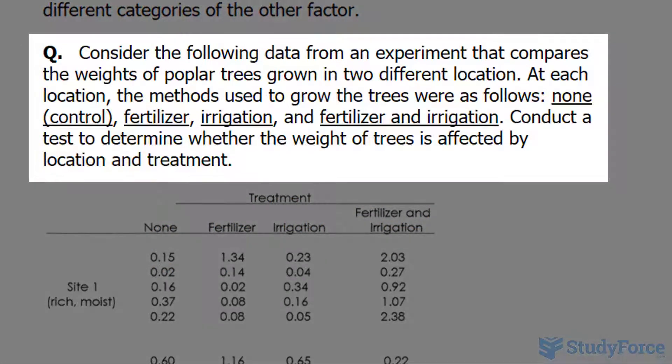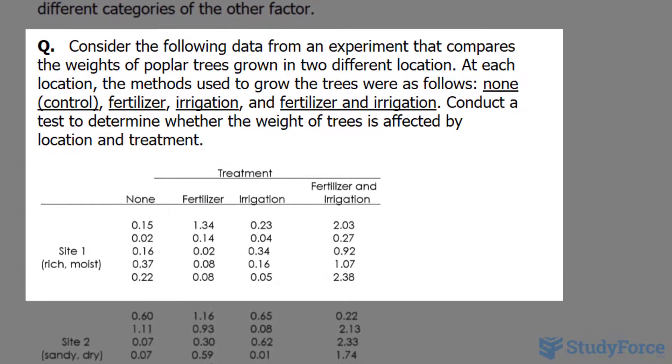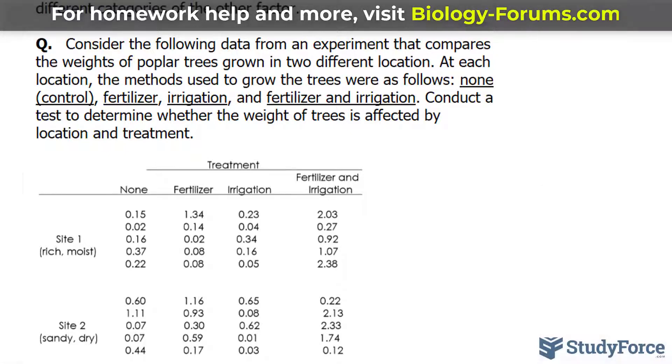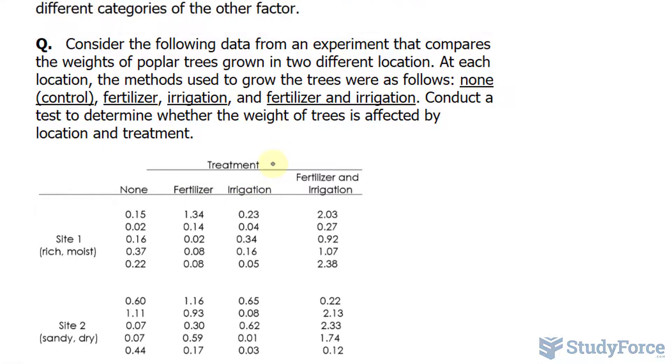With that being said, the question reads: consider the following data from an experiment that compares the weights of poplar trees grown in two different locations. At each location, the methods used to grow the trees were as follows: none, fertilizer, irrigation, and fertilizer and irrigation. Our job is to conduct a test to determine whether the weight of trees is affected by location and treatment.